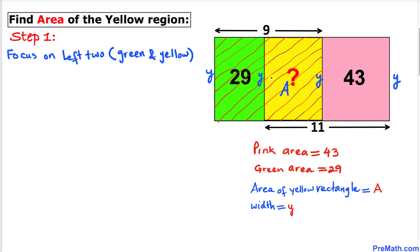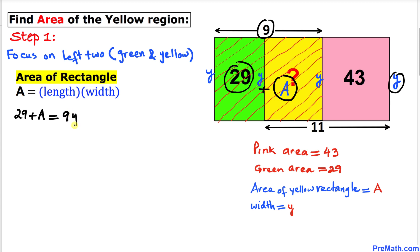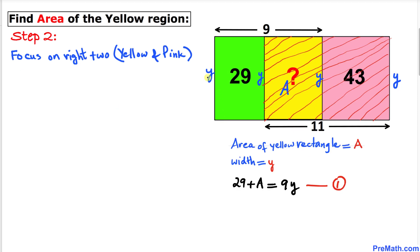Let's focus on the green and yellow rectangles combined, and recall the area of a rectangle formula: area equals length times width. In our case the combined area is 29 plus A, equal to length 9 times width y. So we have: 29 + A = 9y. Let's call this equation number one.